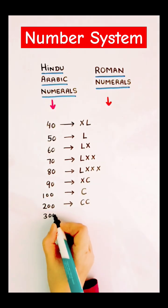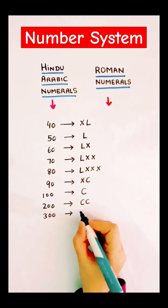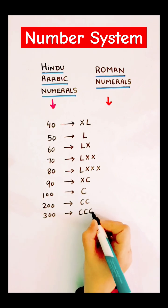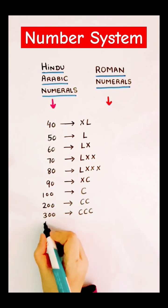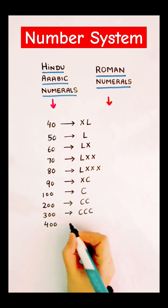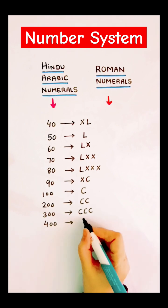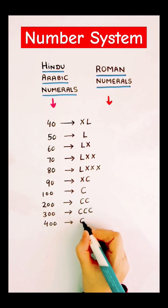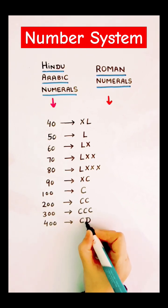And 300 is also easy, not that difficult. The 400 is different. How come? Because it will be C and capital letter D.